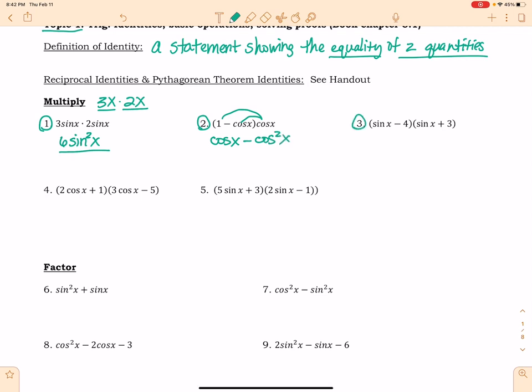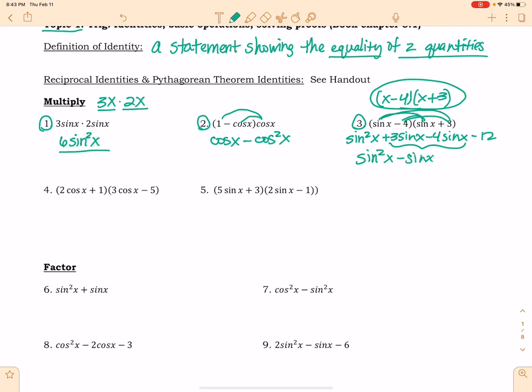Number 3, we're going to treat this just like we would if it was two binomials multiplied together without sine in them. So we're going to FOIL this. Sine x times sine x is sine squared x. Sine times 3 is 3 sine x. Negative 4 sine x and negative 12. These are like terms, so we will combine these. So we have sine squared x minus sine x minus 12.